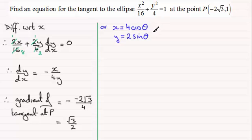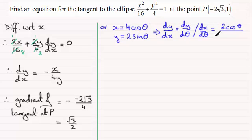So from this it follows that we can get dy by dx. We can get that by doing dy by d theta and dividing it by dx by d theta. So what we end up with is for dy by d theta differentiating this gives us 2 cos theta. And differentiating x with respect to theta gives us minus 4 sine theta.